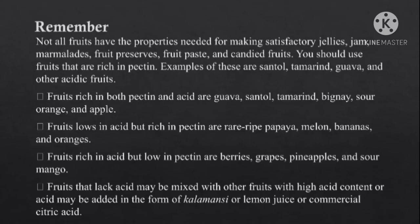Let us remember: not all fruits have the properties needed for making satisfactory jellies, jams, marmalades, fruit preserves, fruit paste, and candied fruits. You should use fruits that are rich in pectin. Examples of these are santol, tamarind, guava, and other acidic fruits. Fruits rich in both pectin and acid are guava, santol, tamarind, bignay, sour orange, and apple.